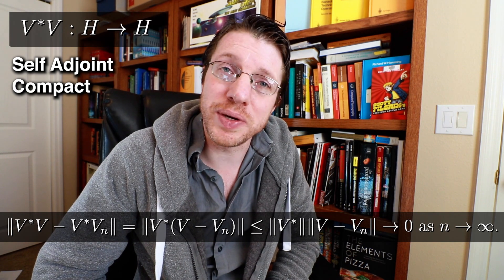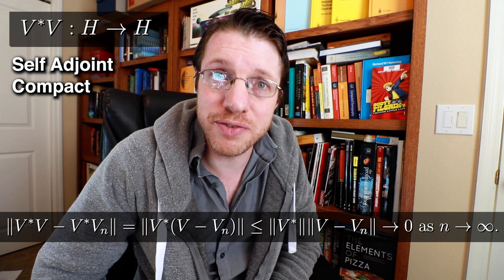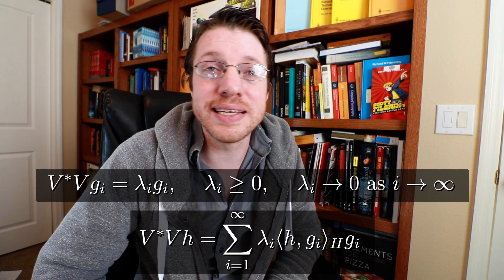That means we have a self-adjoint compact operator. This maps from H to H so we can now talk about eigenfunctions. So now we know that the spectral theorem for self-adjoint compact operators actually applies. We have a spectrum and we have an orthonormal basis for H that is an eigenbasis for V star V. So now we'd like to turn this into an SVD.